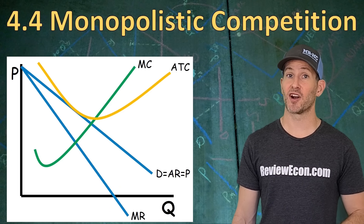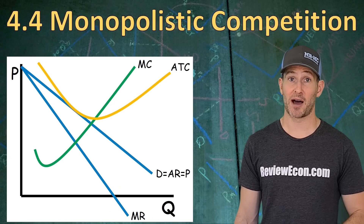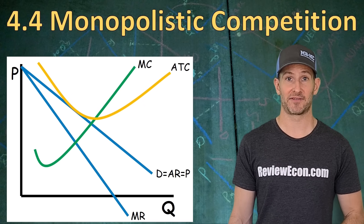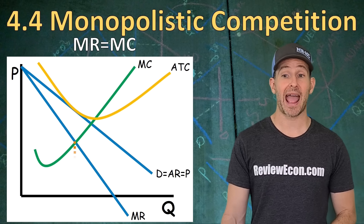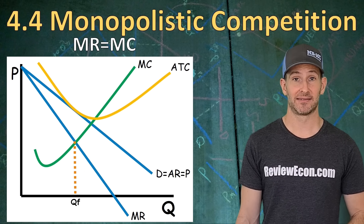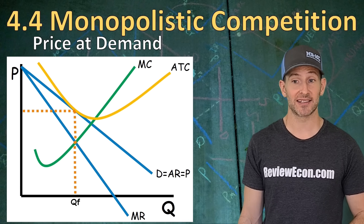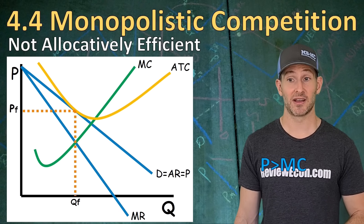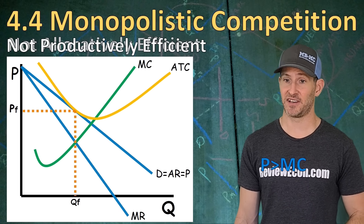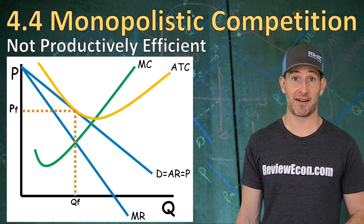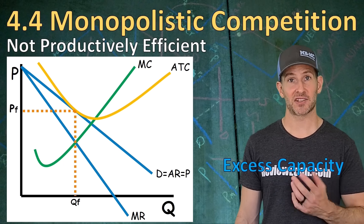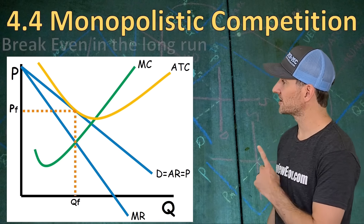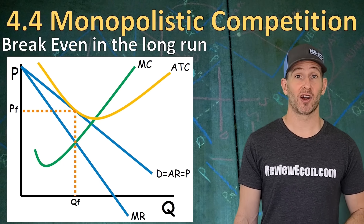On the graph, the monopolistically competitive firm looks identical to a monopoly, so make sure you know how to draw a monopoly graph and you'll automatically know how to draw a monopolistically competitive graph. This firm produces where MR equals MC and prices up to demand just like a monopoly. This firm is not allocatively efficient because the price is greater than marginal cost. They are also not productively efficient because they are not producing at the minimum of the average total cost. This firm has excess capacity — that's what we call it in monopolistically competitive markets. And this is what it looks like for a monopolistically competitive firm in the long run.